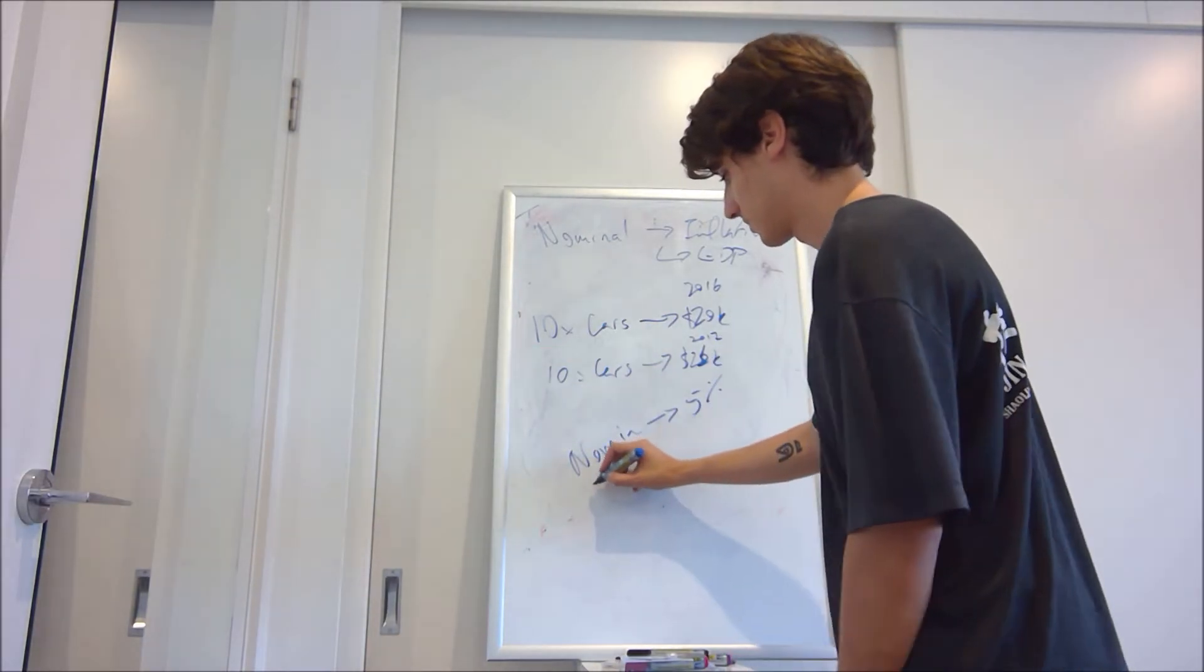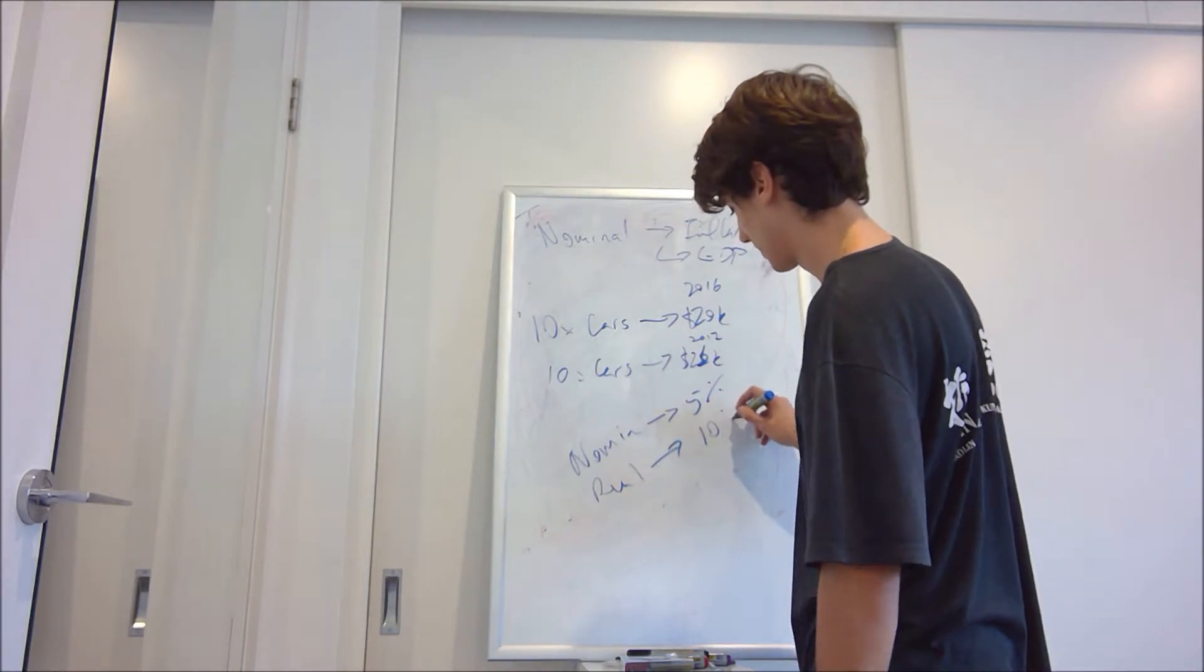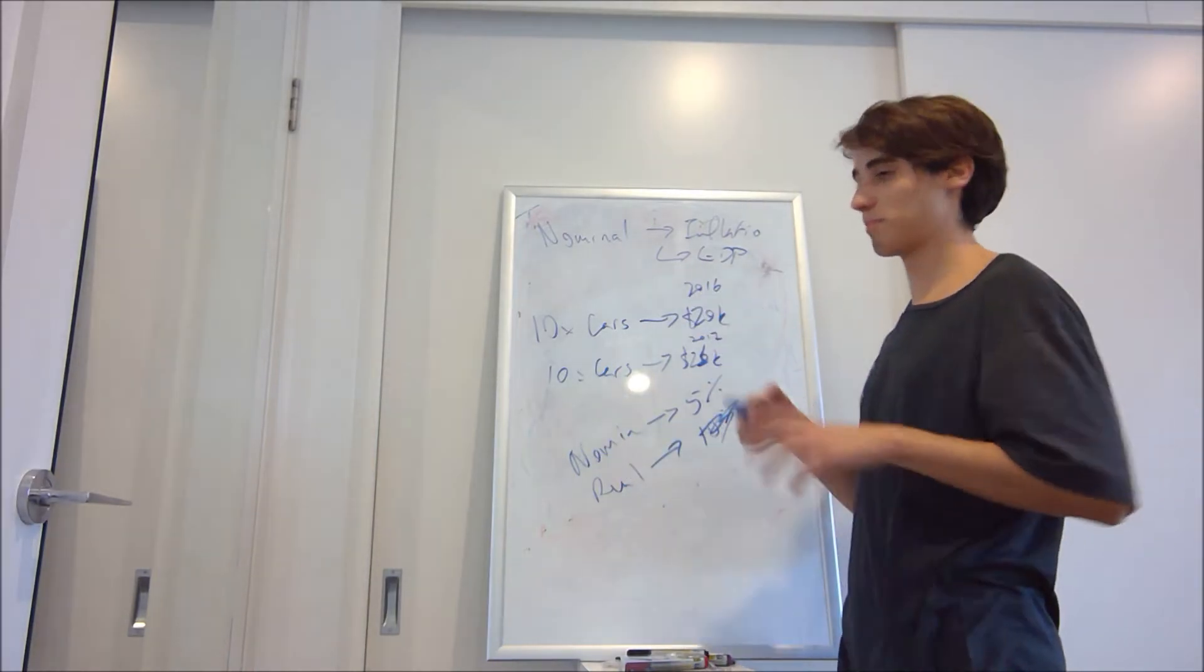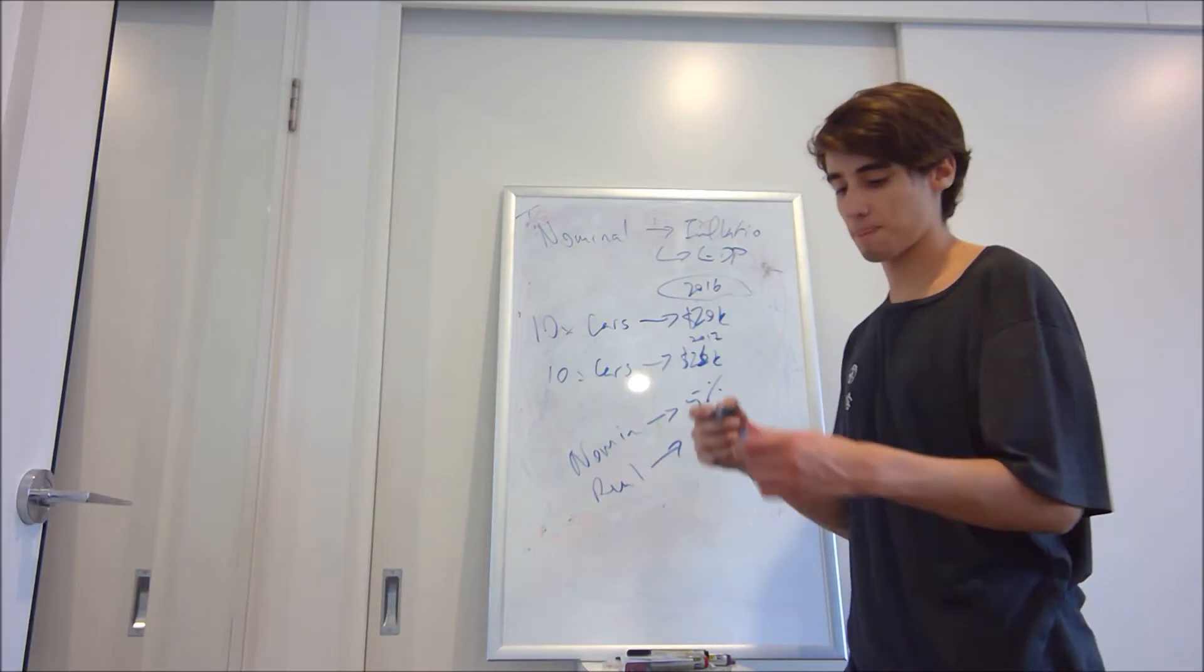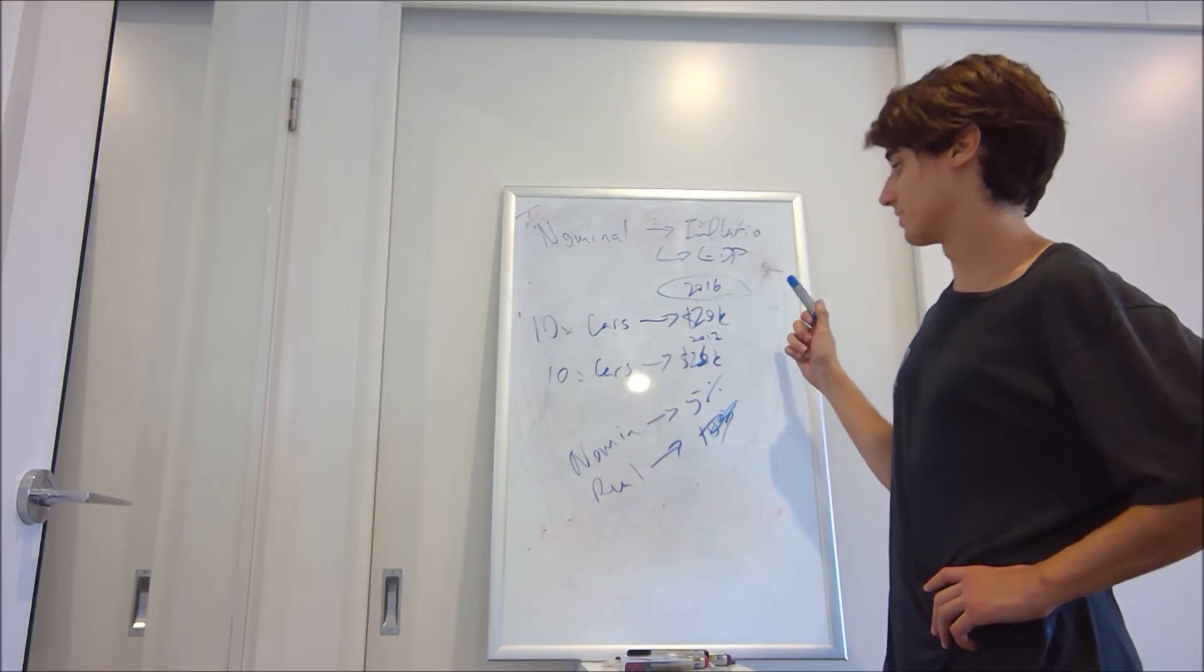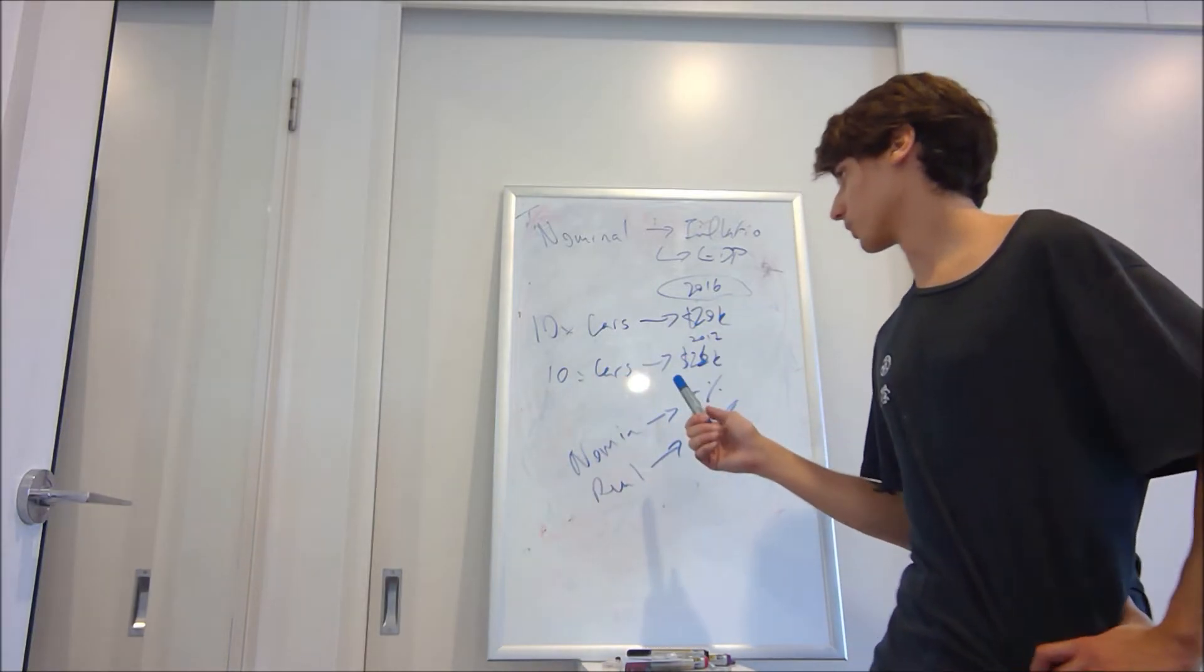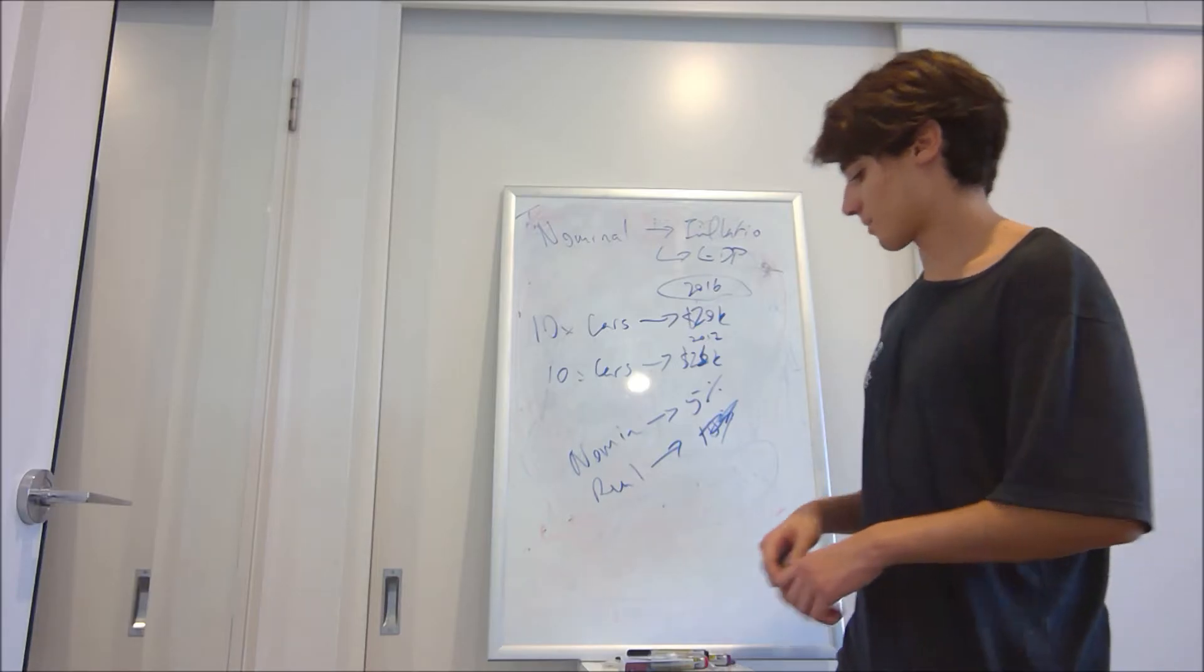However, your real GDP will increase by nothing. Your real GDP uses the price on a base year to calculate the increase. Since the price of the 2017 model only increased in this example because of inflation, your real GDP will be 0%.